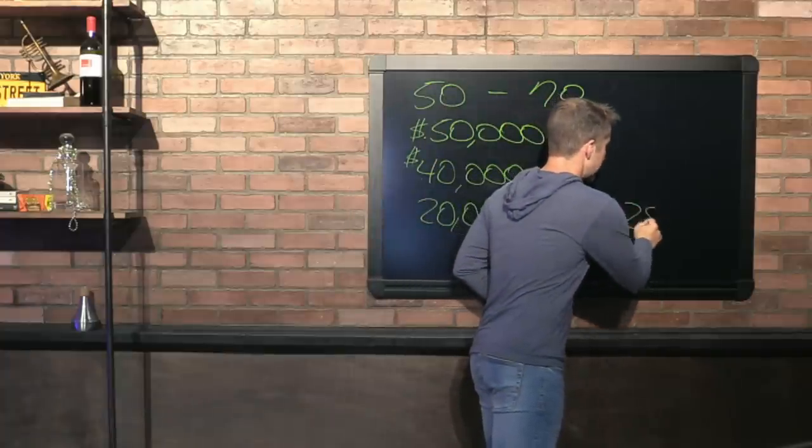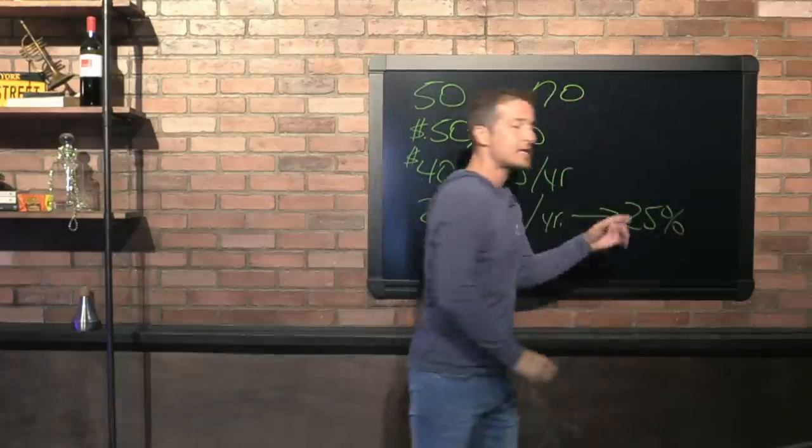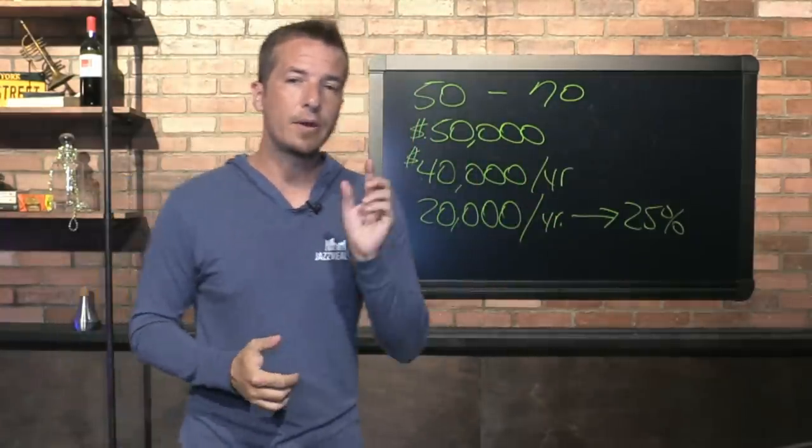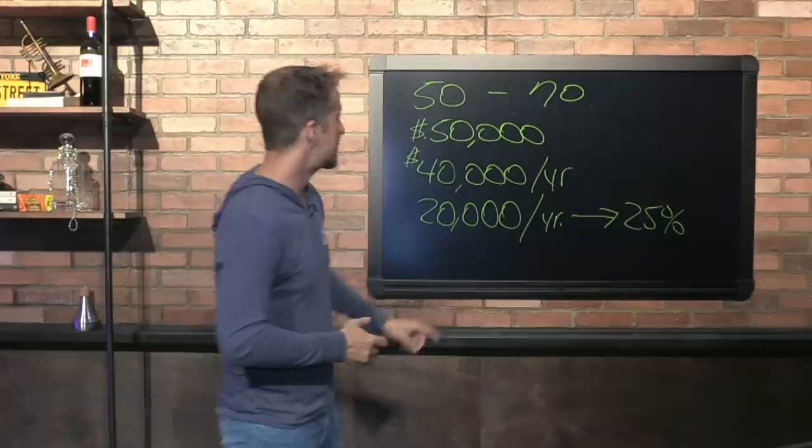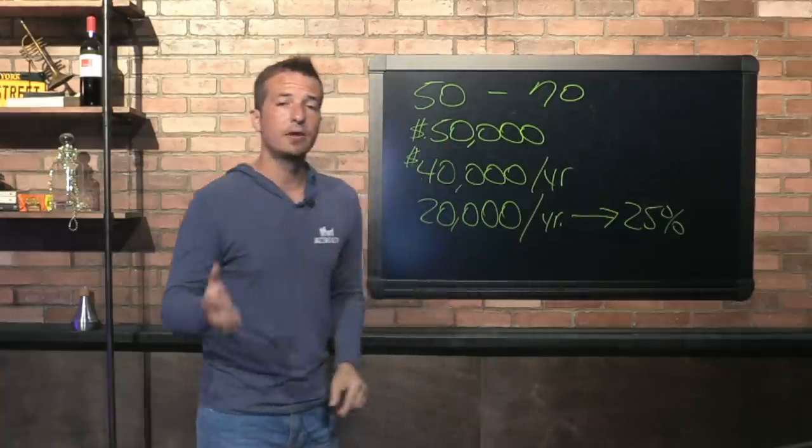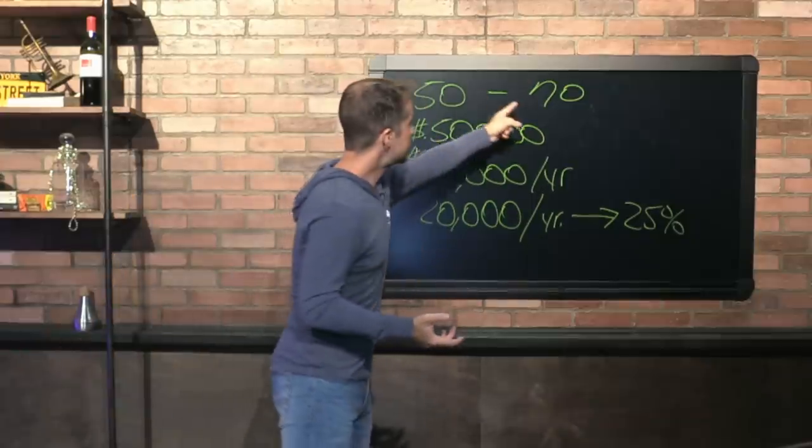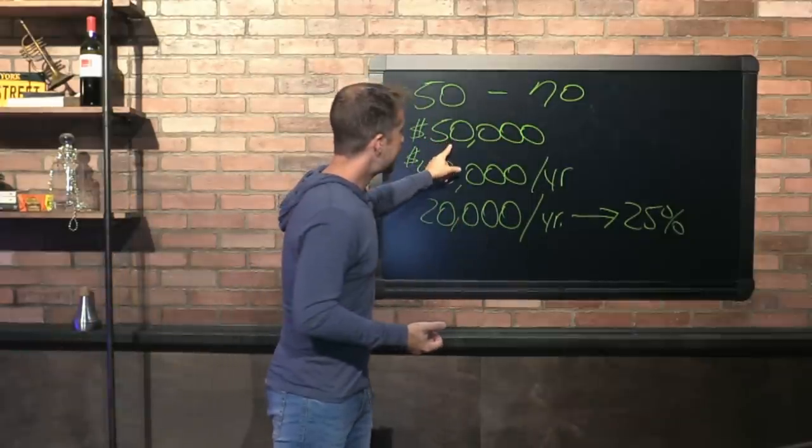I'm going to assume that that is taxable. Just to make it a little bit harder on you. And I'm going to say it's taxable at 25%. Maybe none of it's taxable. I don't know. Whatever this $20,000 is, I'm going to assume it's taxable at 25% to make this equation a little bit harder on you. All right? So far so good.